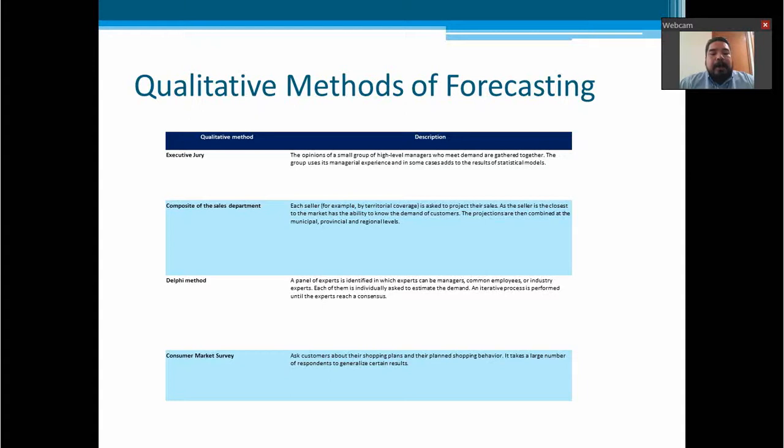And finally, we can use the consumer market survey, where we ask customers about their shopping plans and their planned shopping behavior. It takes a larger number of respondents to generalize certain results. So every time we apply a survey, we have to be sure of what we are asking the market for. And the questions in the survey have to be very closely analyzed so we have the information that we really need.